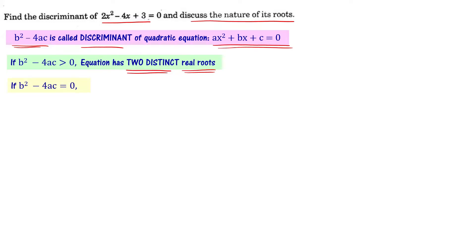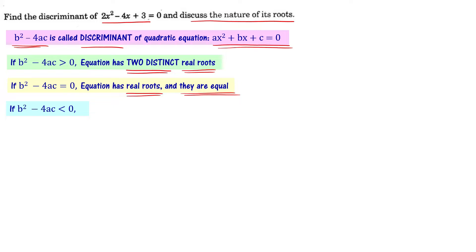If b² - 4ac is equal to 0, then the equation has real roots, but they are equal. If b² - 4ac is less than 0, then the given equation has no real roots. The discriminant is able to tell you whether the roots are going to be real, and if they are, whether they are distinct numbers or the same number.